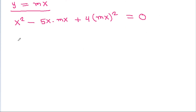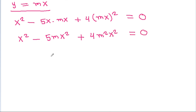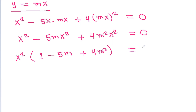And it becomes x squared minus 5m x squared plus 4m squared x squared is equal to 0. We can take x squared common, and we will get 1 minus 5m plus 4m squared is equal to 0. Comparing coefficients of x squared, we get 1 minus 5m plus 4m squared is equal to 0.